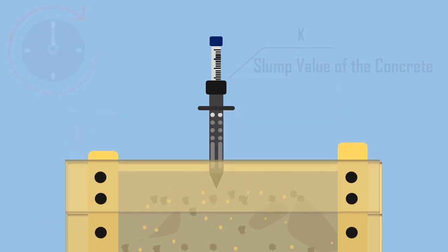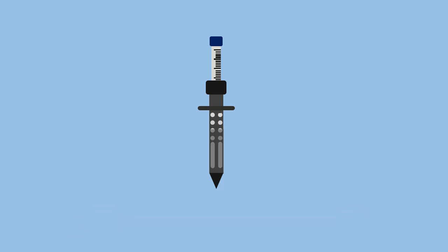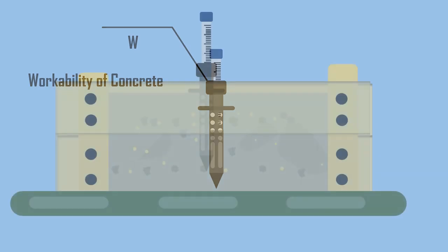Now remove the tester from the concrete vertically up and lower the measuring rod slowly till it touches the surface of the concrete retained in the tube. Note down the value on the graduated scale. Take it as W, which denotes the workability of concrete.